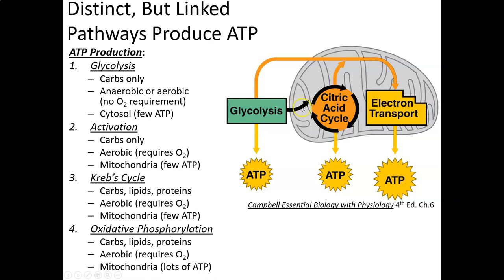The activation step doesn't produce many ATP, but the citric acid cycle — which the activation step gets pyruvate ready to enter — does make some ATP. The nice thing about the citric acid cycle is that we can break down carbohydrates or lipids there, or convert proteins into carbohydrates or lipids that eventually can be broken down in the citric acid cycle. In glycolysis, the citric acid cycle, and other places, we make high-energy carriers called NADH or FADH2.